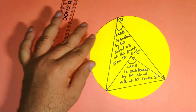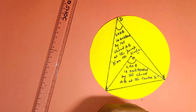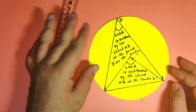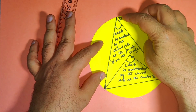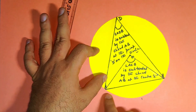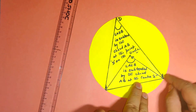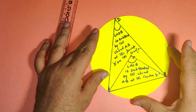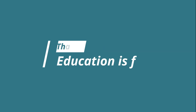This was regarding the angle subtended by the chord at the center and on the remaining part of the circle — or anywhere on the circle. You can create the angle subtended on the major arc, on the minor arc, the smaller portion of the circle, or the greater portion of the circle. Anywhere else you wish, you can create this using paper folding.